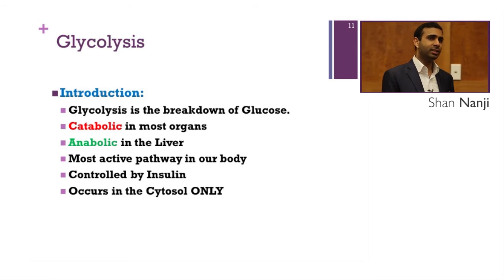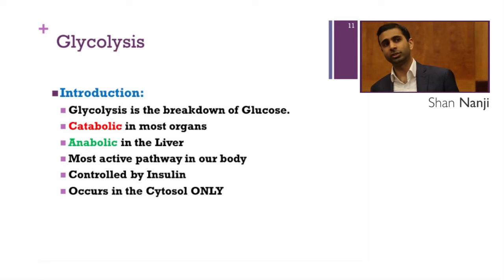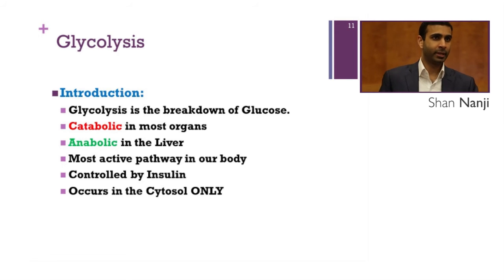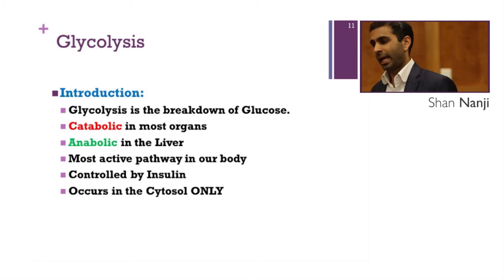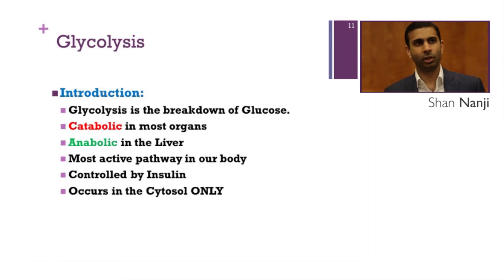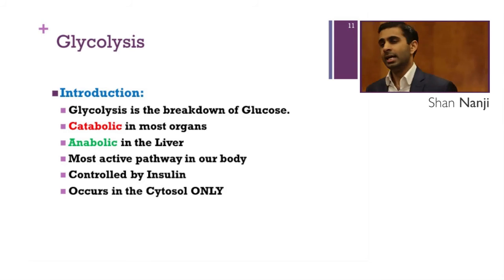Glycolysis is the breakdown of glucose. It is catabolic in most organs but anabolic in the liver. It is the most active pathway in our body, controlled by insulin, and it only occurs in the cytosol. Since glucose is the form of energy our body uses first, and glycolysis occurs in both biochemical states, it is the most active pathway at any given time. Insulin must be present to push glucose into cells in order to run glycolysis.